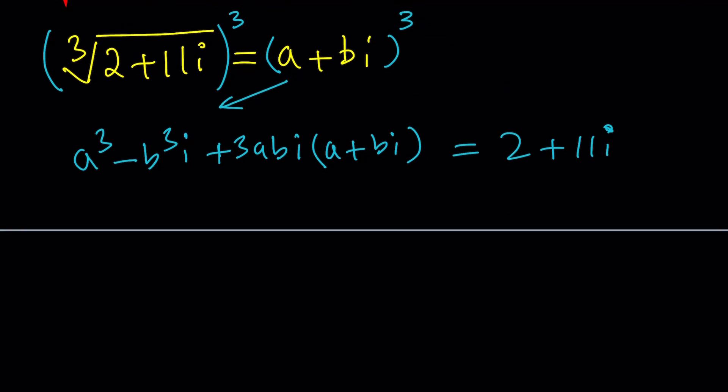Again, there are three numbers whose cube equals 2 plus 11i in the complex world, and we're going to find all of them. So let's go ahead and arrange these terms on the left-hand side a little bit. A cubed, and then from here I get 3AB squared with a minus sign because i squared is negative 1. And then for the imaginary part, I'm getting 3A squared B minus B cubed. That's the imaginary part.